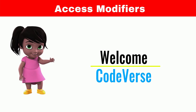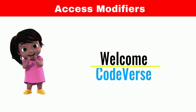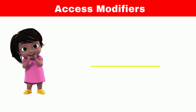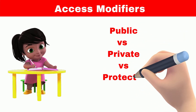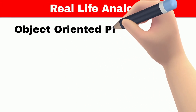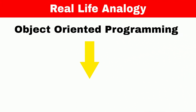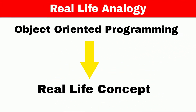Hello everyone, welcome to the codeverse. In this video, we will learn about the access modifiers — that is public, private, protected, and default — with the help of a real life analogy. All the object-oriented programming concepts are inspired from real life. So let's understand the concept of access modifiers with a real life analogy.